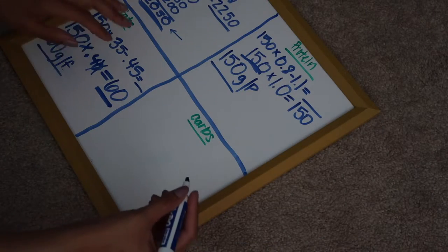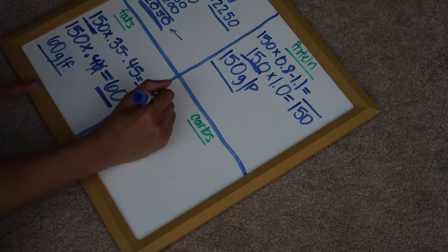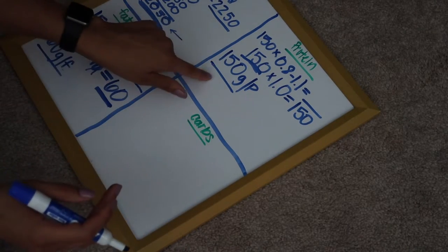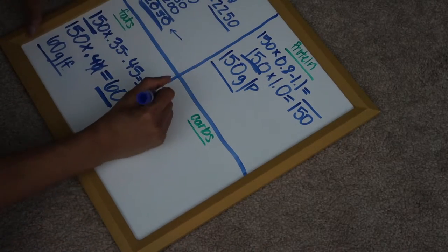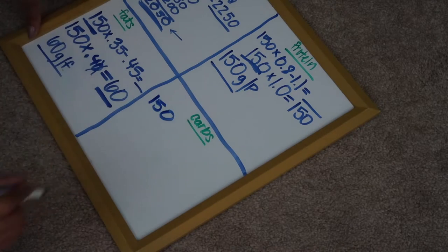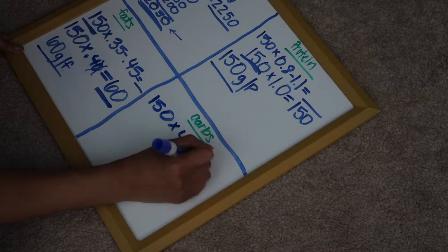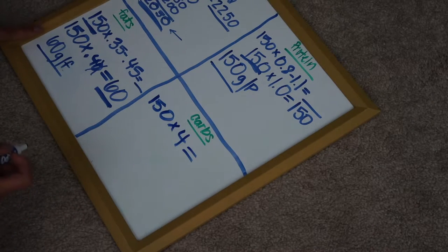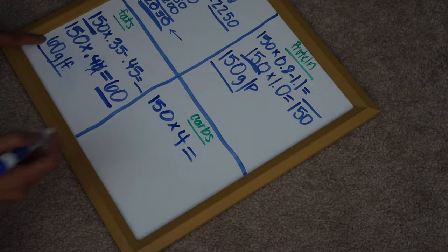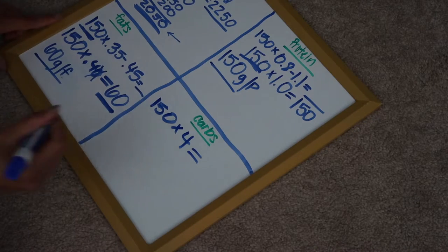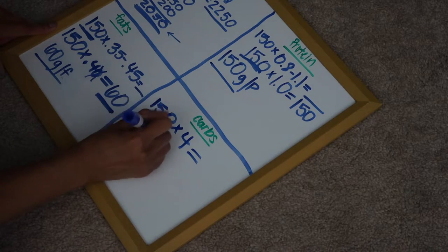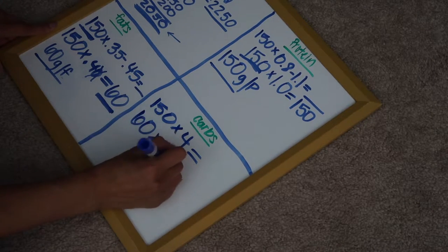Okay. So this is what you do for carbs. You're going to take carbs, which is, I'm sorry, you're going to take your protein number, which is 150 for me, 150. And then you're going to multiply this by four. And then you're going to take 60 right here from your fat. And you're going to multiply that by nine.